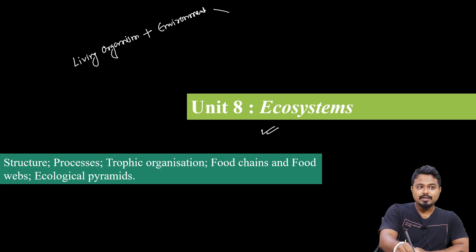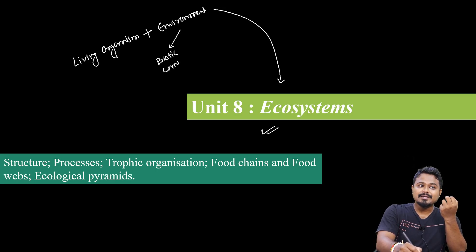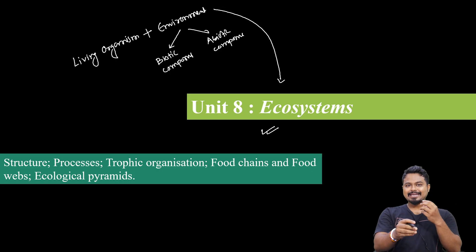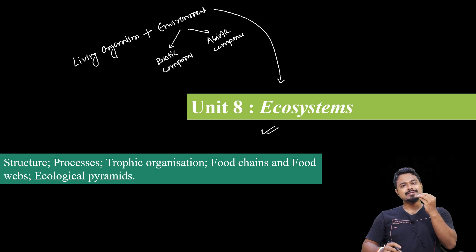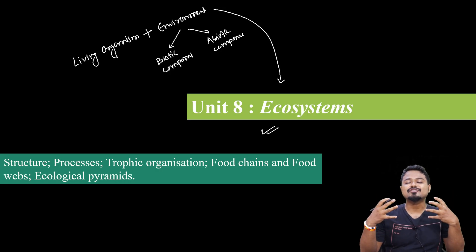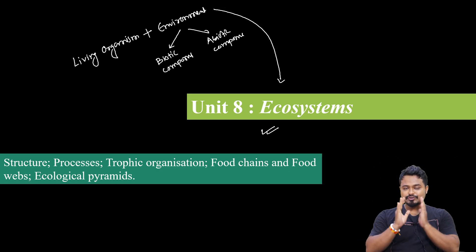Ecosystem means that our living organisms have an interaction with the environment. It is called an ecosystem. This environment has a very important biotic component and also an abiotic component. So how do we know that living organisms consist of biotic plus abiotic components? If we look at this environment and interact with it, we have to study the ecosystem.